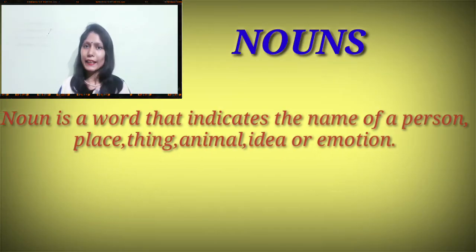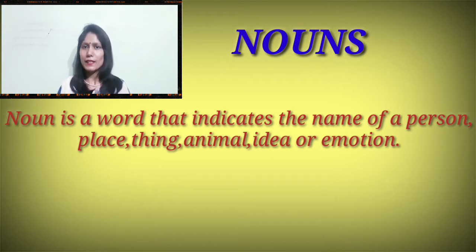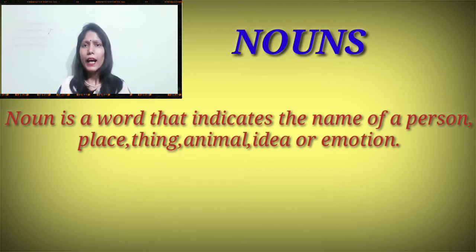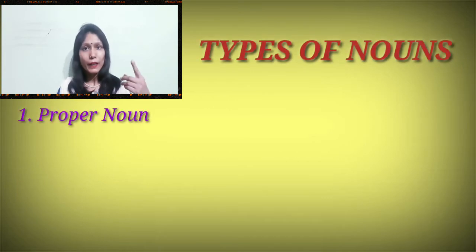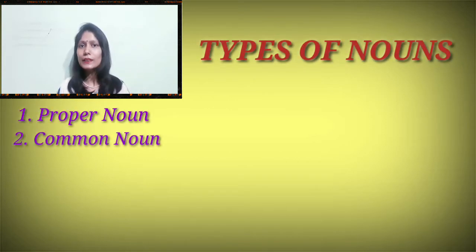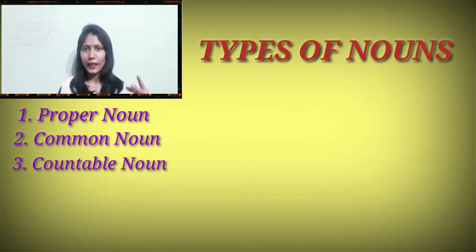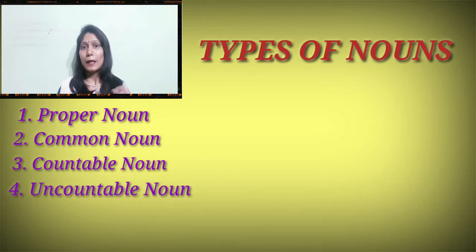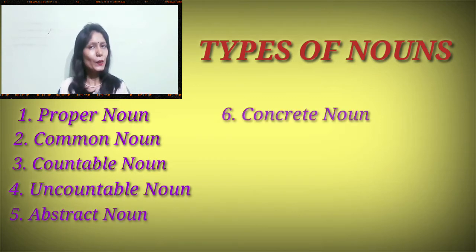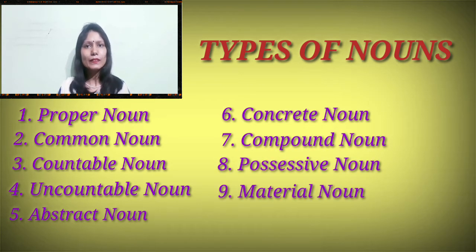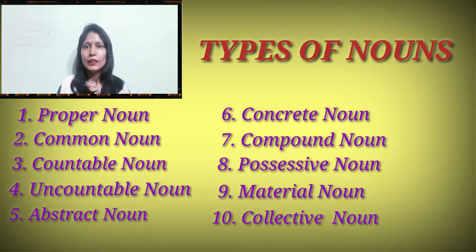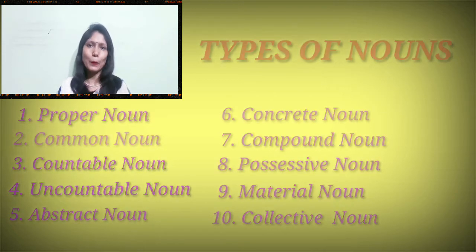Noun is a word that indicates the name of a person, place, thing, animal, idea or emotion. And there are different kinds of nouns like proper noun, common noun, countable noun, uncountable noun, abstract noun, concrete noun, compound noun, possessive noun, material noun and collective noun. Now let's start with proper noun.